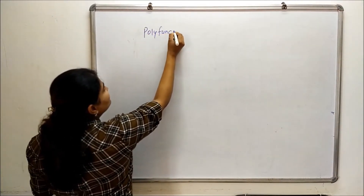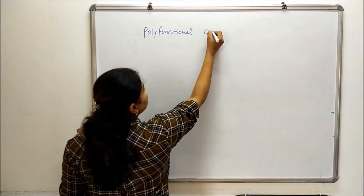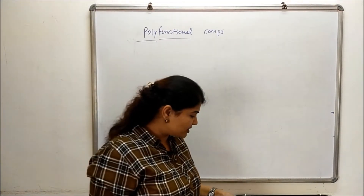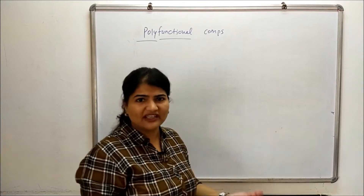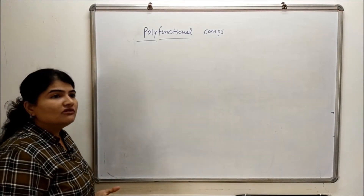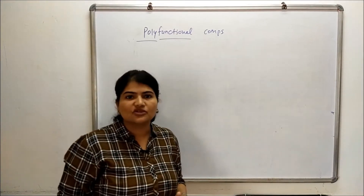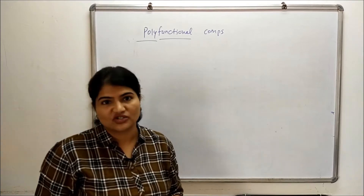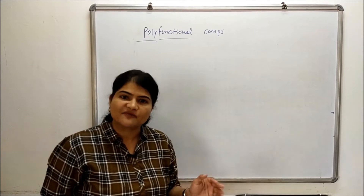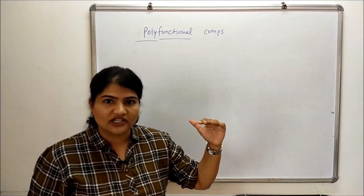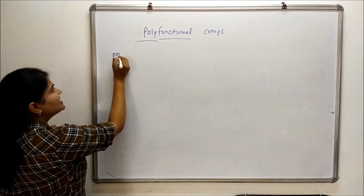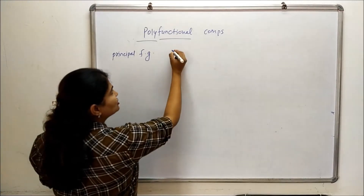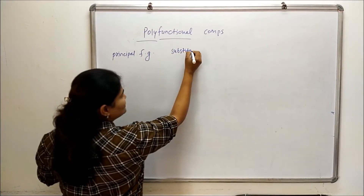As you can guess from the name itself, polyfunctional compounds — poly means many, functional means functional groups. So if an organic compound contains more than one functional group, it can be referred to as a polyfunctional compound. For giving IUPAC names to such compounds, we have to consider one functional group as the parent or principal functional group and another functional group as substituent.